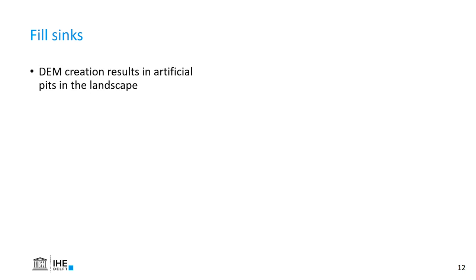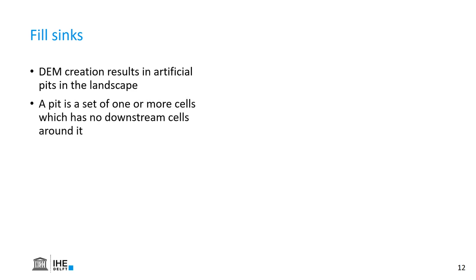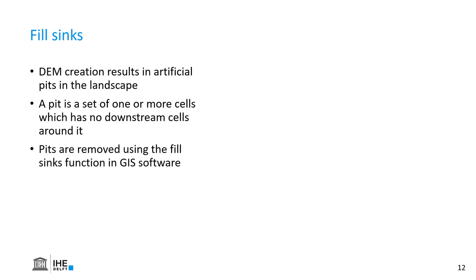The next step is to fill the sinks. This should not be confused with the voids. Voids are no data, and sinks are depressions — artificial depressions in the landscape that are caused by the DEM creation process. So it's one or more cells which don't have a downstream cell around it, so the water is not able to escape to the outlet. We can remove those using fill-sink algorithms in GIS software.